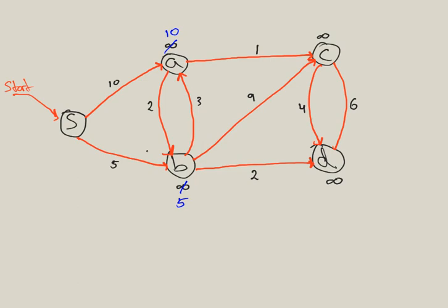Now Dijkstra's algorithm will select the least of these two, so it will select the edge from S to B. This is the path it will take.